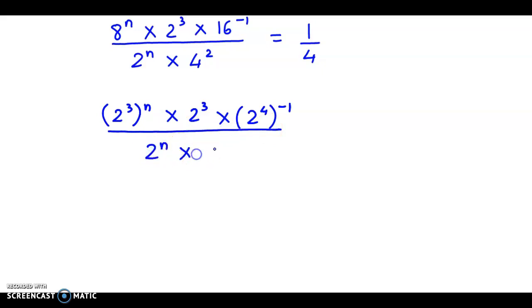Divided by 2 raised to n as it is. 4 here is 2 square, the whole square. And we could write this as 1 by 2 square. So therefore we have 2 raised to 3n times 2 cube times 2 raised to, now 4 times minus 1, that's minus 4.